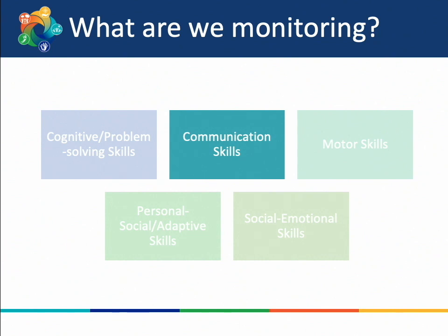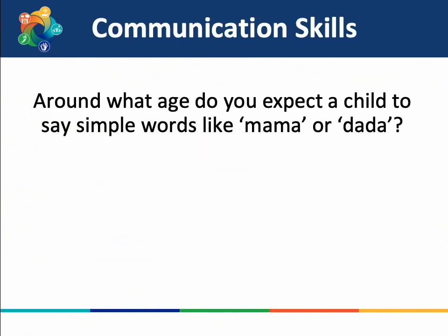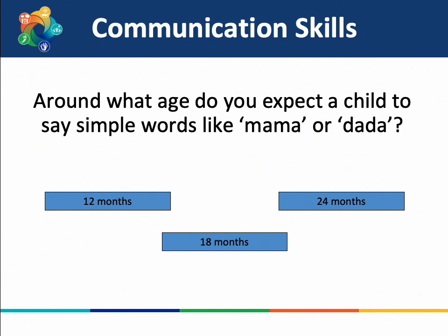Before moving on, let's jump back to our game, focusing on communication skills — how a child understands and speaks with language, including words or signs. Around what age do you expect a child to say simple words like mama or dada? Our options are 12, 18, and 24 months. The answer is 12 months.